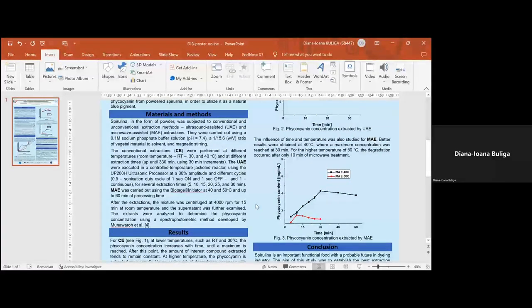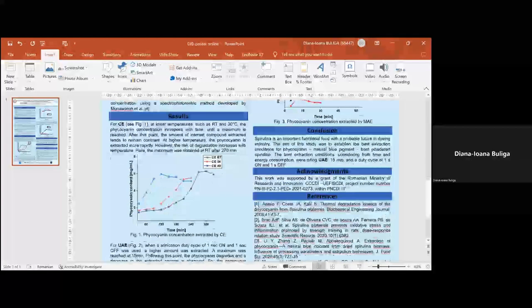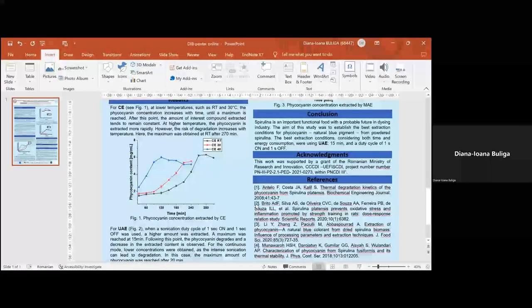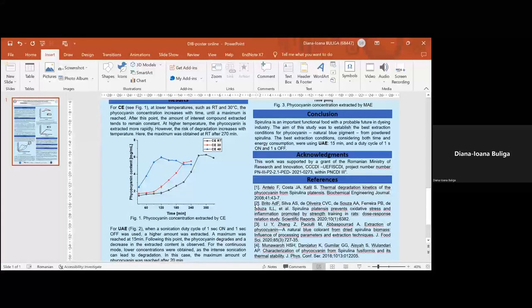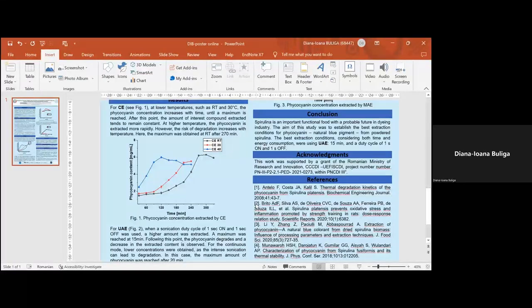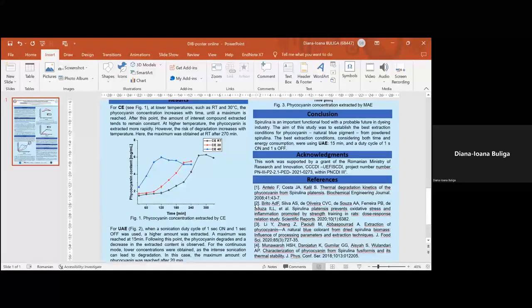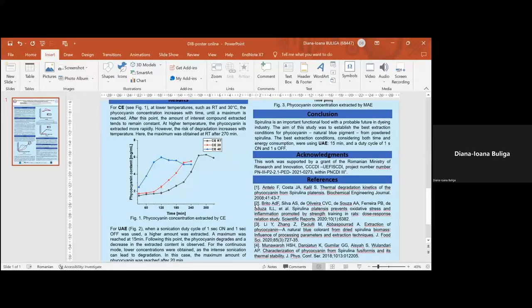Finally for microwave assisted extraction the focus was on the influence of time and temperature. Better results were obtained at 40 degrees Celsius where maximum concentration was reached at 30 minutes. Increasing the temperature by 10 degrees led to degradation of phycocyanin after only 10 minutes of treatment. To sum up, spirulina is an important functional food with probable future in the dyeing industry. The aim of this study was to establish the best extraction conditions for phycocyanin and our data showed that these are obtained when using ultrasound assisted extraction for 15 minutes and a duty cycle of one second off and one second on. Thank you for your attention. If there are any more questions I will be happy to answer.